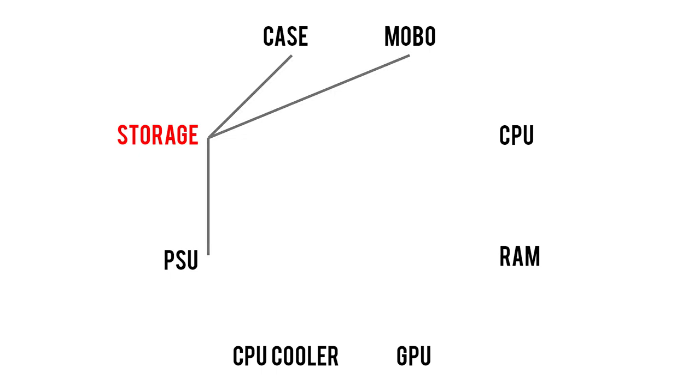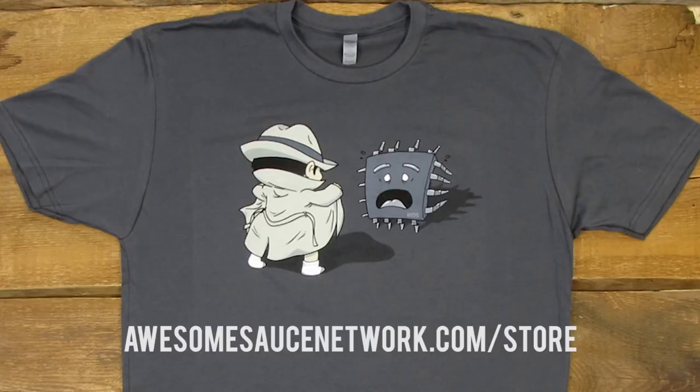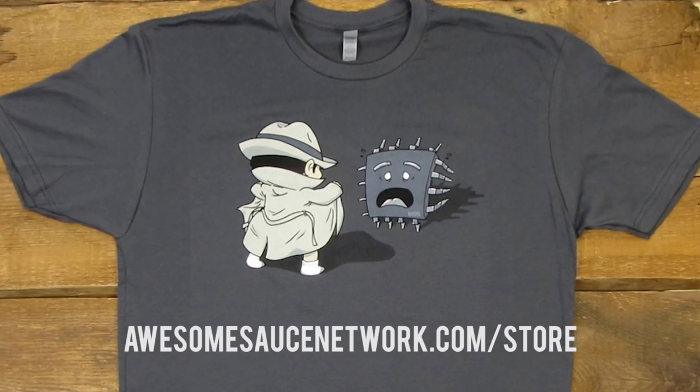That leaves us to storage, but by now we've exhausted all of its various part associations, thus concluding today's lesson on the Octagon of Compatibility. I know this was a lot of thick information to run through, and there's a fair chance that I overlooked a few things myself, so if you're watching this as a seasoned PC builder, please share any compatibility tips I might have missed in the comments below. Before you guys go, don't forget to toss me a like on this video if you enjoyed it, and feel free to check the description below for my new BIOS flasher shirt. As always, I'm Kyle with Awesome Sauce Network — thank you guys for watching. Subscribe to the channel if you haven't already, and I'll see y'all in the next video.